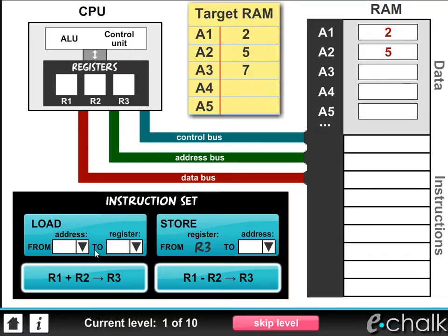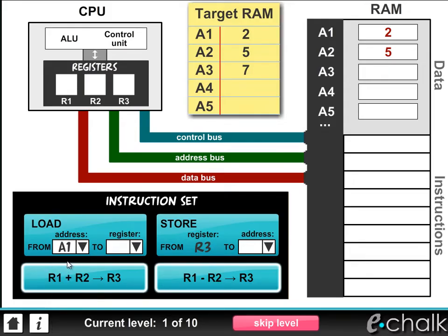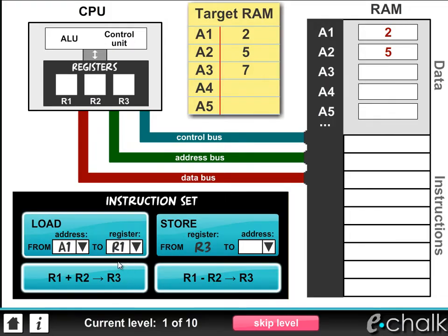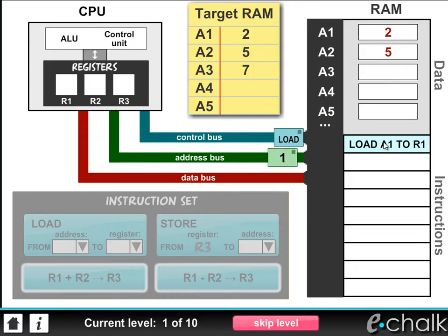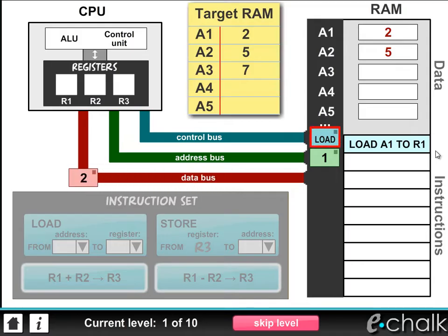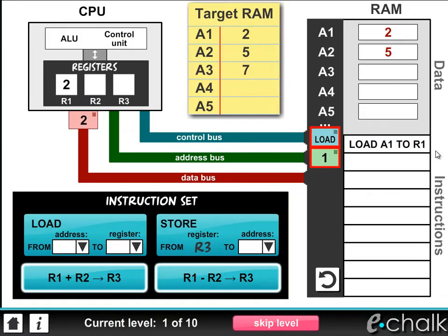To use this instruction, we need to specify the address. We want the data at address 1, then we need to specify the register we want the data loaded into — so let's choose register 1. Now we can start to build our program by dragging our instruction onto the instruction stack in RAM. The instruction is executed straight away and we can see the information carried by each bus. The system is directed to load the data at address 1, so we see the data bus carrying the number 2 to the CPU, where it ends up in register 1 as per our instruction.